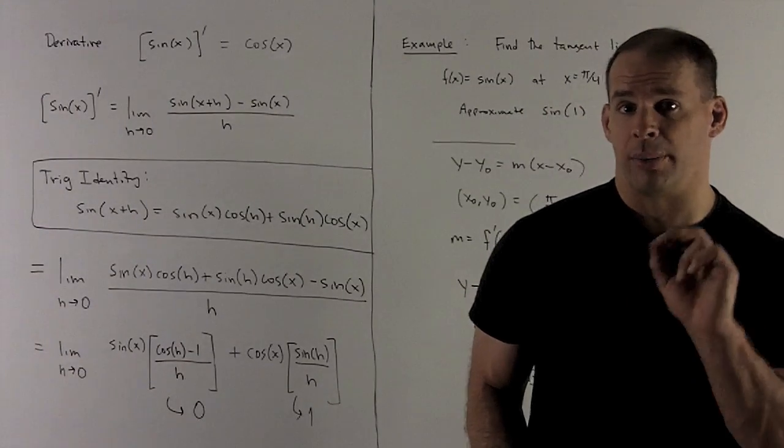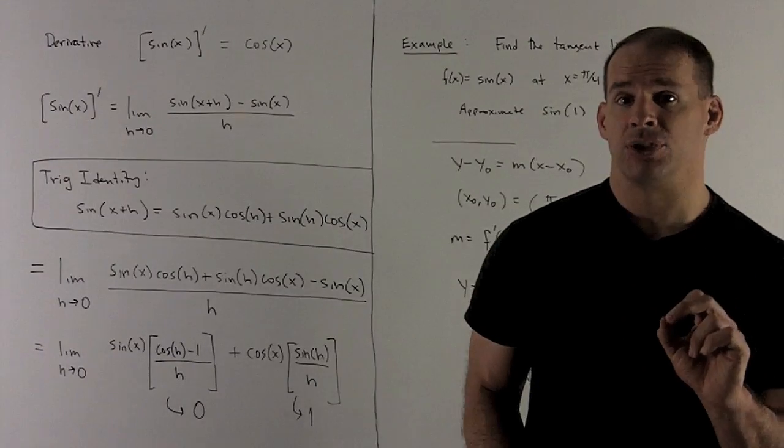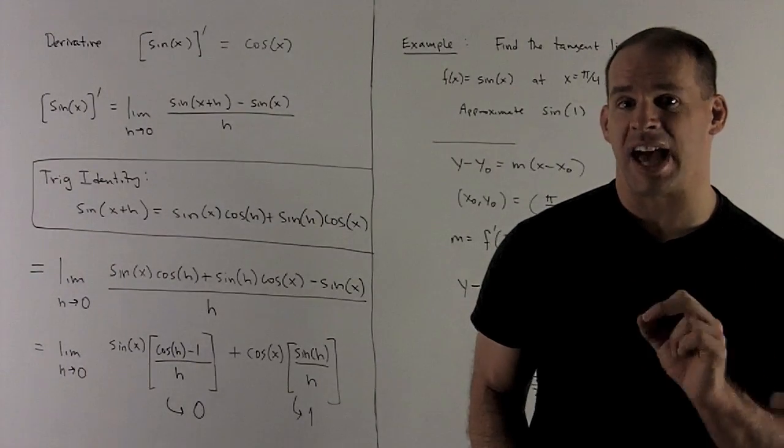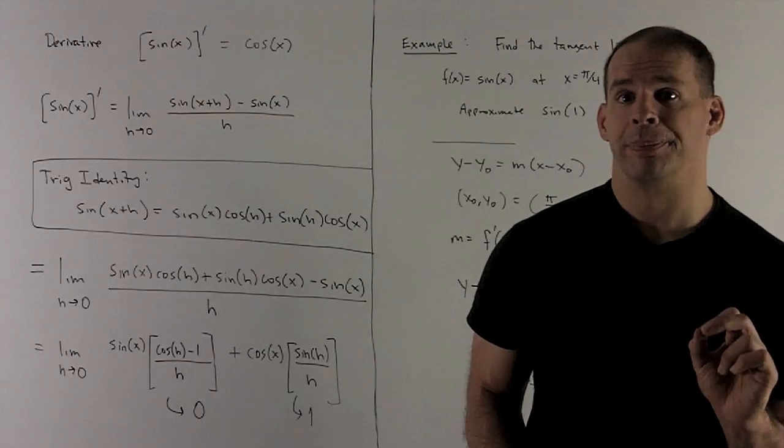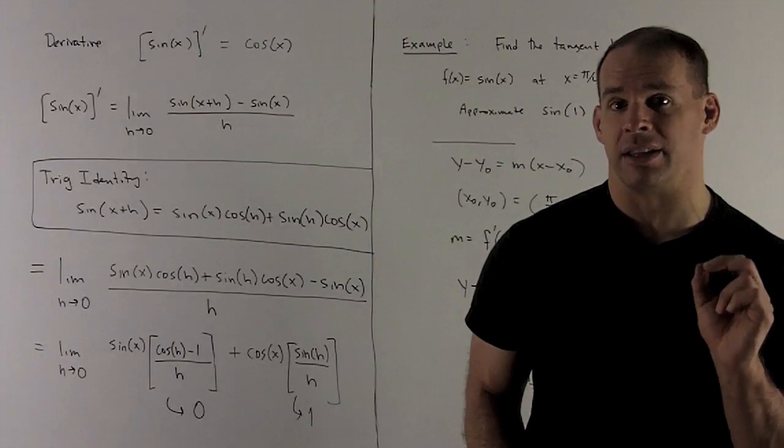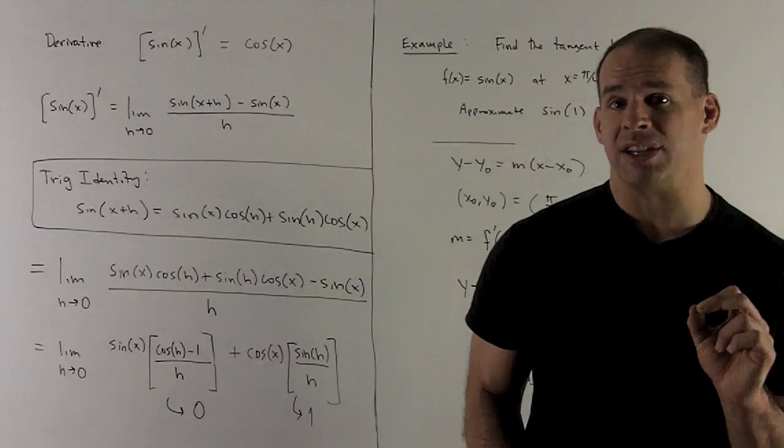When I take the limit of that, note the sine term has just an x in it, so that's to be treated as a constant. Our limit's in terms of h, so it's like the sine x is just a number. That cosine h minus 1 over h we've done before, it's at the end of the limit section. That's going to go down to zero.